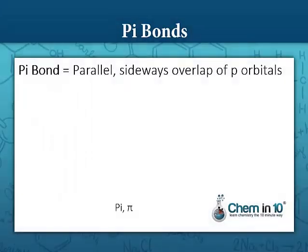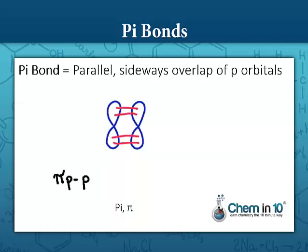Contrast this with pi bonds. A pi bond is a parallel sideways overlap of p orbitals. So here we have p orbitals overlapping side by side.